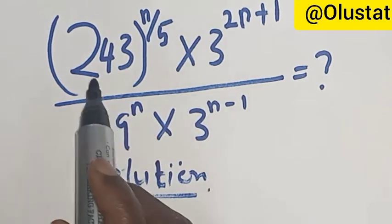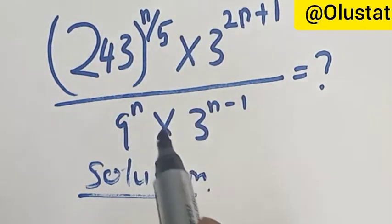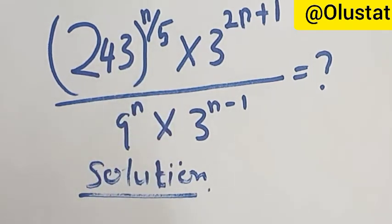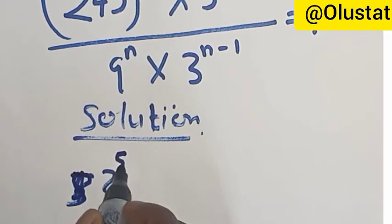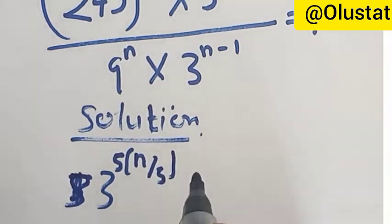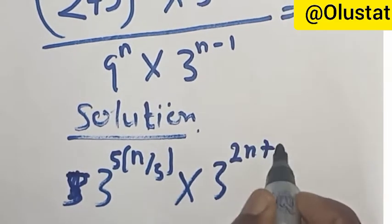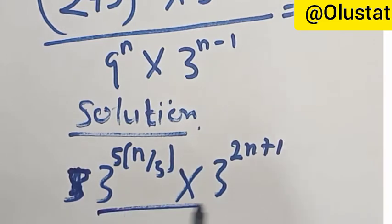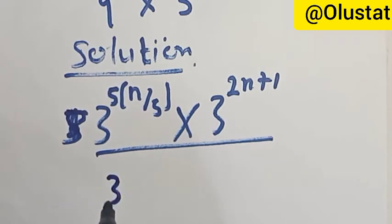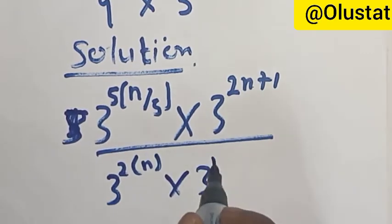The question says 243 raised to power n over 5, multiplied by 3 raised to power 2n plus 1, all over 9 raised to power n multiplied by 3 raised to power n minus 1. Now, 243 can be expressed as 3 raised to power 5, so we have 3 raised to power 5 into n over 5, then multiplied by 3 raised to power 2n plus 1.